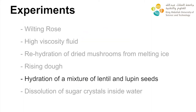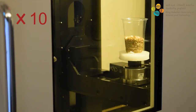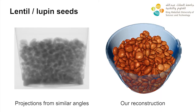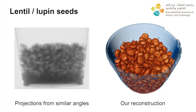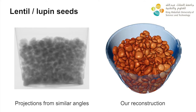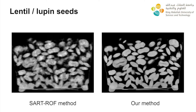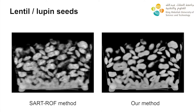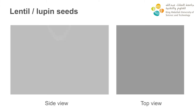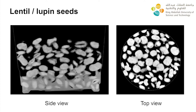Now, we present our reconstruction of a mixture of lentil and lupin seeds soaked in water. This scanning process lasted 5 hours and 12 minutes. On the left, we illustrate a rapid succession of projections acquired during the scanning process from similar viewing angles. On the right side, a 3D rendering of the seed's motion is given for approximately the same angle. Our reconstruction method is compared to the baseline method using slice visualizations. Here, we show two slice visualizations obtained with our reconstruction method for the same time step.